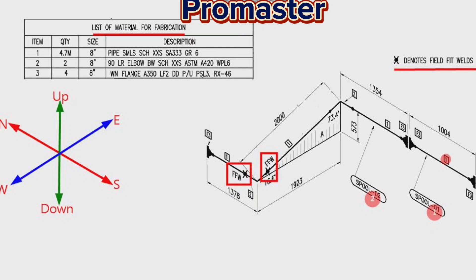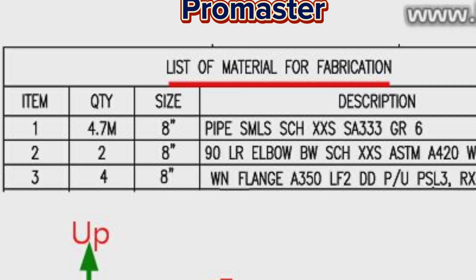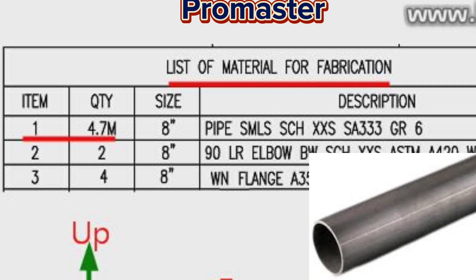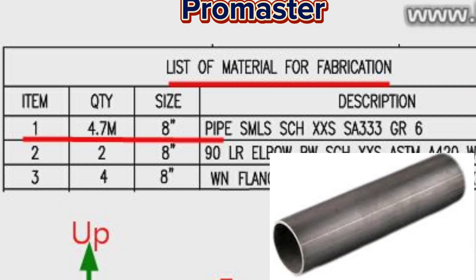Detail number 1 shows pipe, used in several places in the pipe drawing. Let's look at the material list. Item number 1 is 8-inch pipe, schedule XXS, the material is carbon steel, grade A333. Total length used is 4.7 meters.